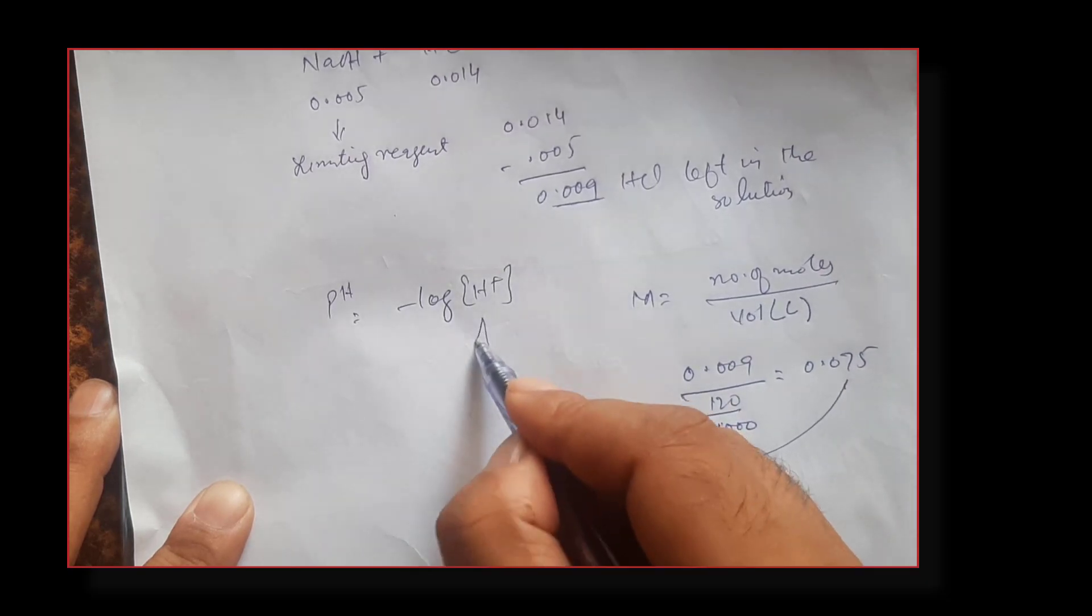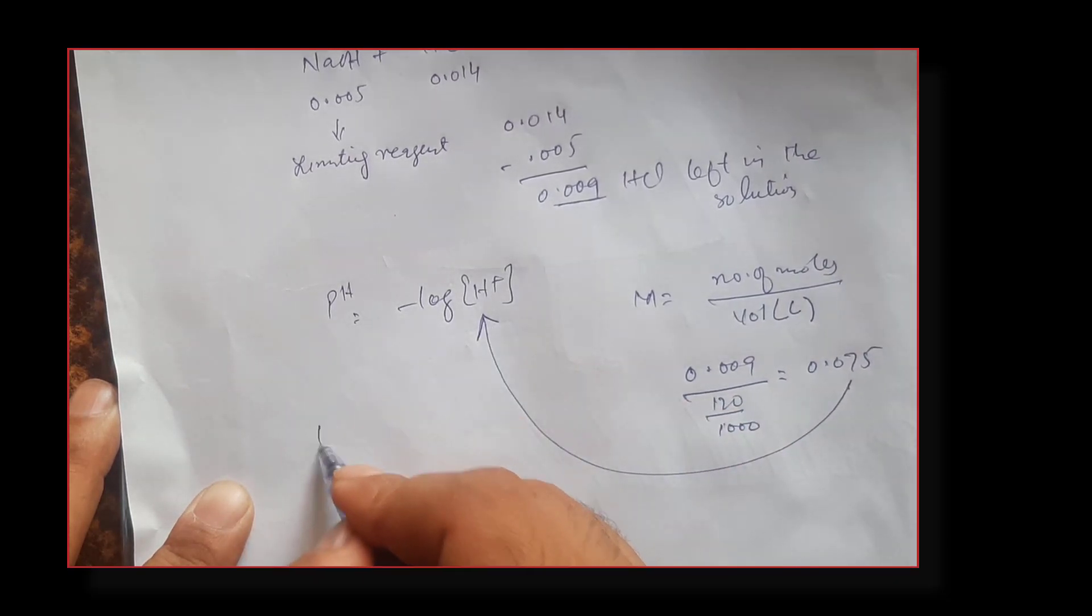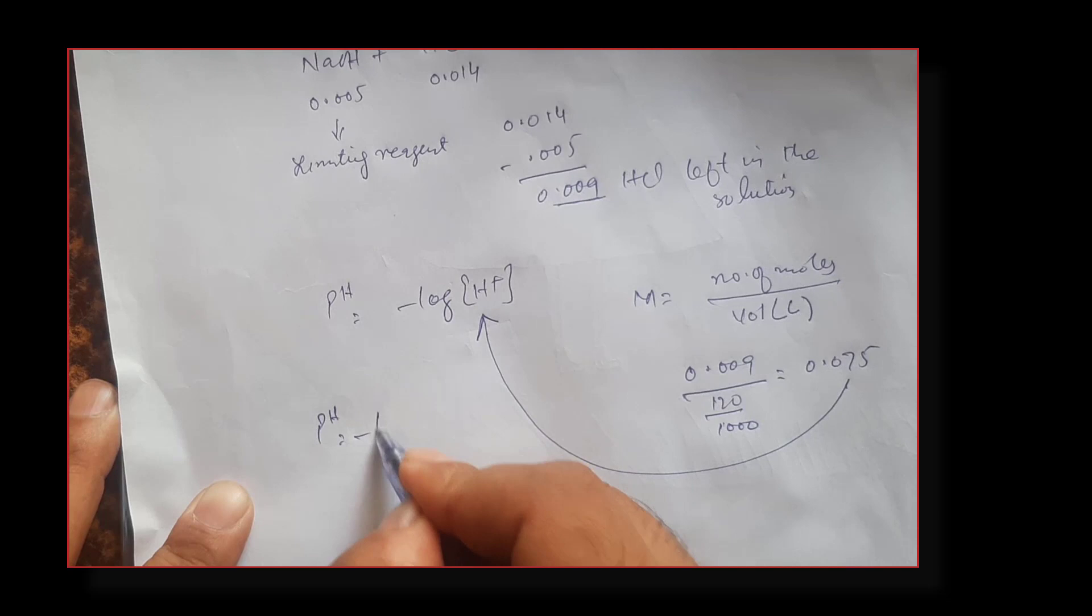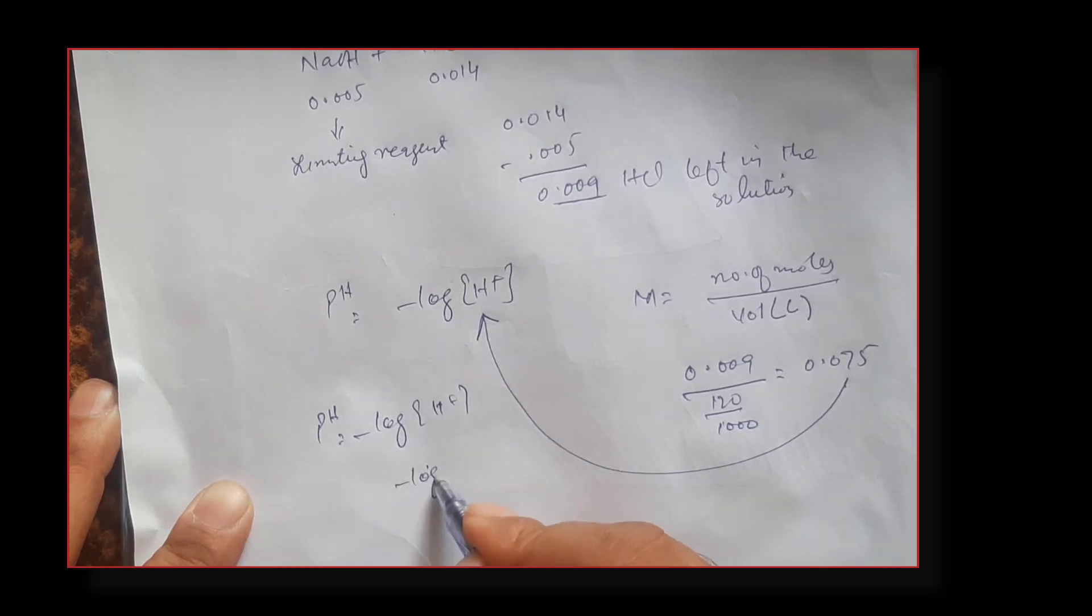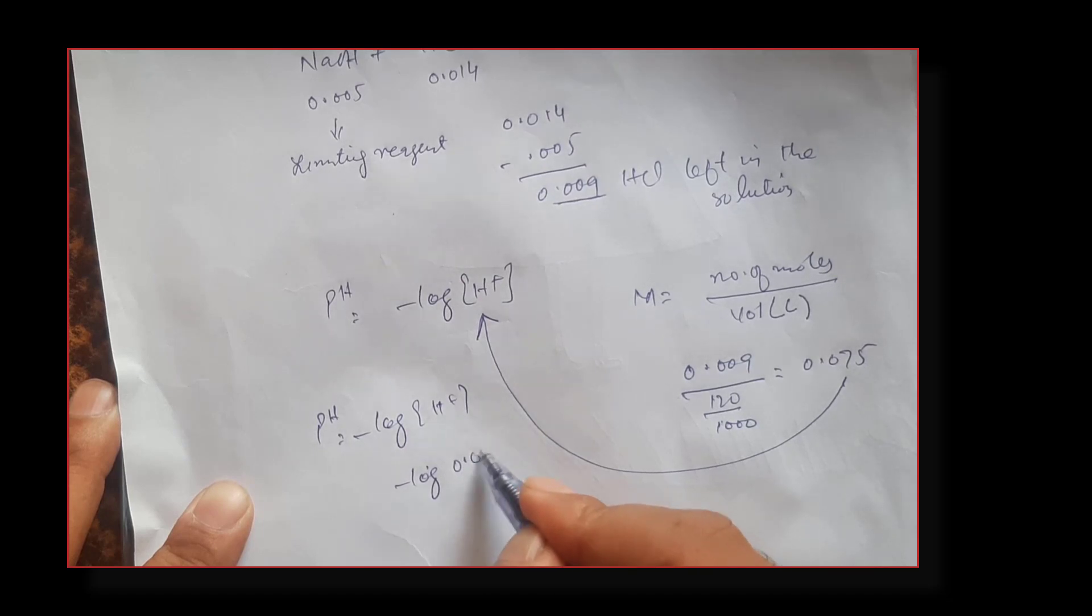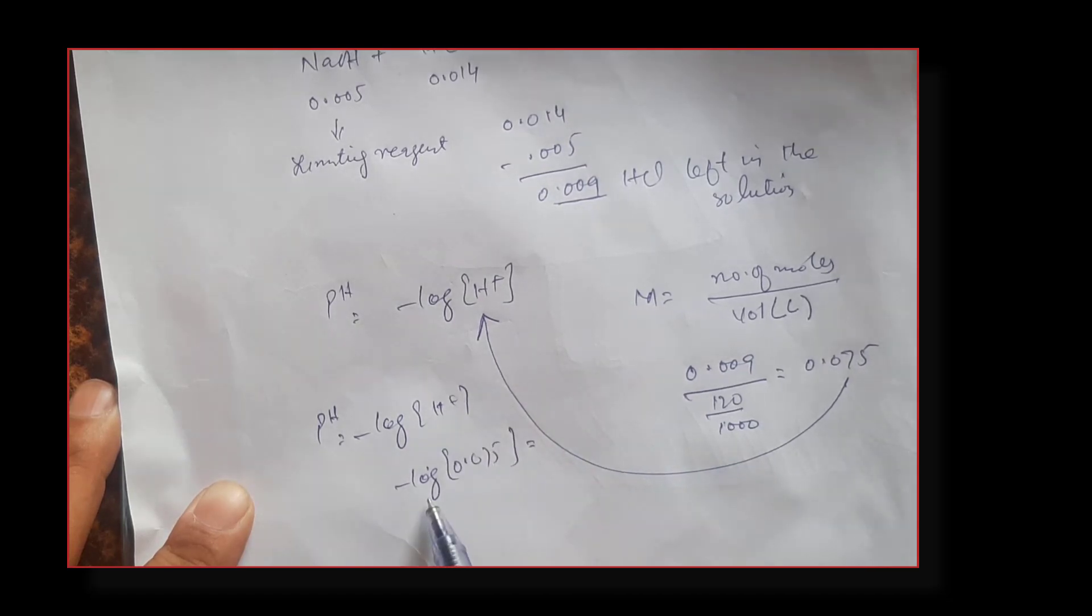Let's put this into the equation. pH equals negative log of H+ ion. So it's negative log of 0.075. Take the negative log of 0.075 and pH comes out to be 1.12.